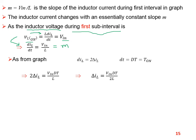In the buck converter the slope was equal to (V_in minus V0) divided by L, and in the boost converter this was equal to V_in divided by L. In the buck-boost converter as well, this slope is equal to V_in divided by L. Now, 2·delta_IL equals the slope multiplied by T_on equals V_in·DT divided by L, and therefore delta_IL equals V_in·DT divided by 2L.